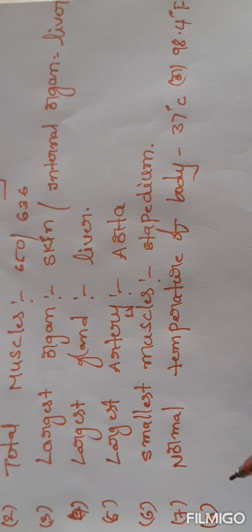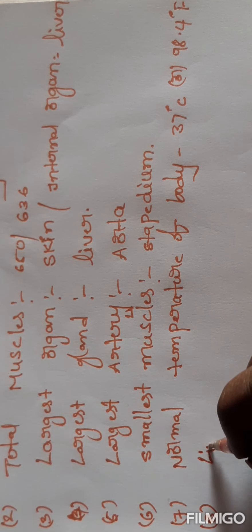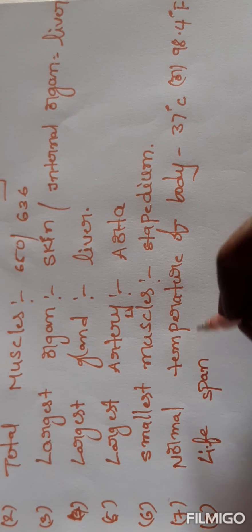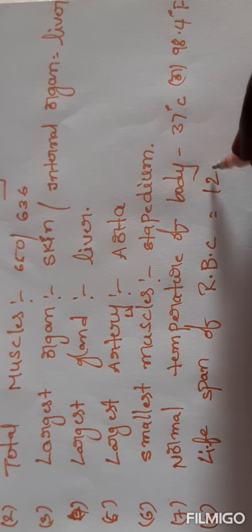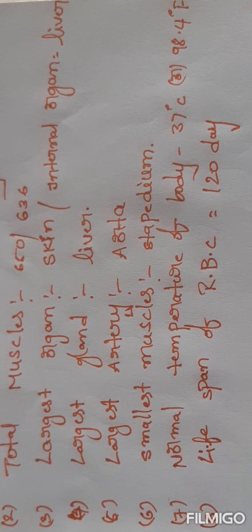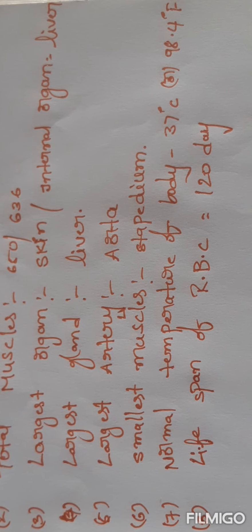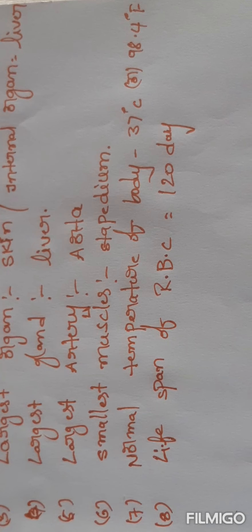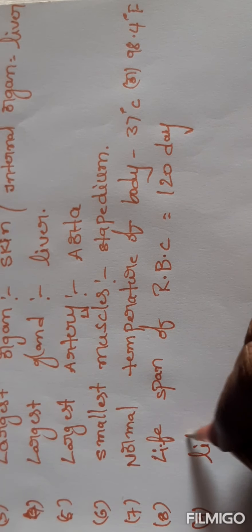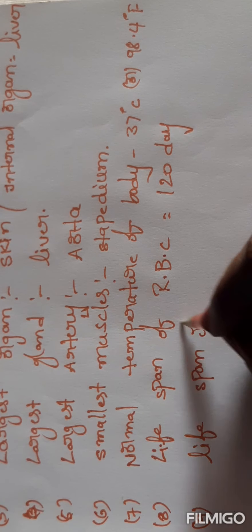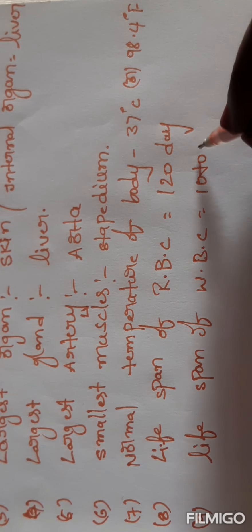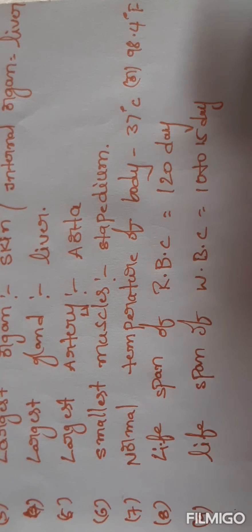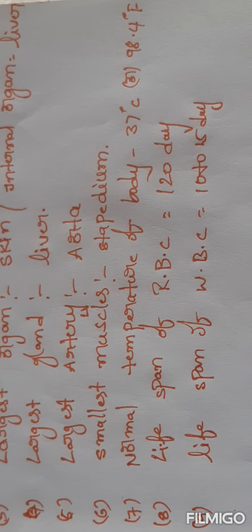Eighth one: life span of RBC (red blood cells) is 120 days exactly. Life span of WBC (white blood cells) is 10 to 15 days.